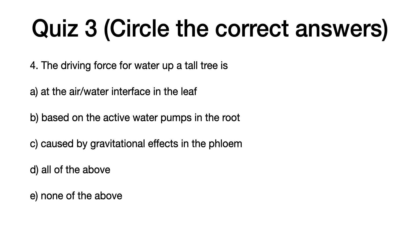Four, the driving force for water up a tall tree is: A, at the air-water interface in the leaf. B, based on the active water pumps in the root. C, caused by gravitational effects in the phloem. D, all of the above. E, none of the above.